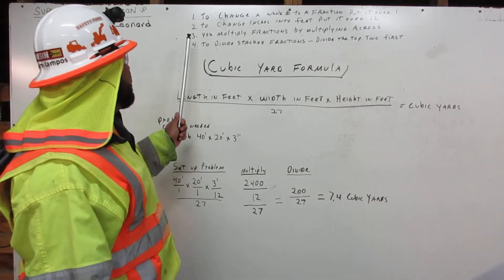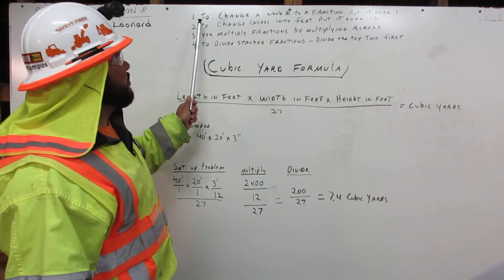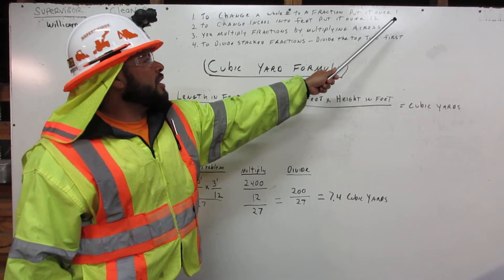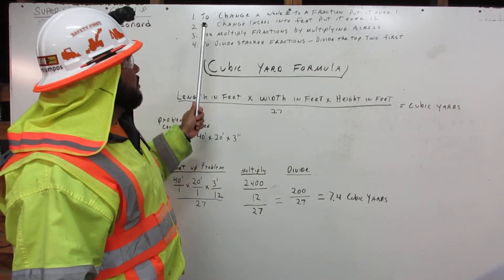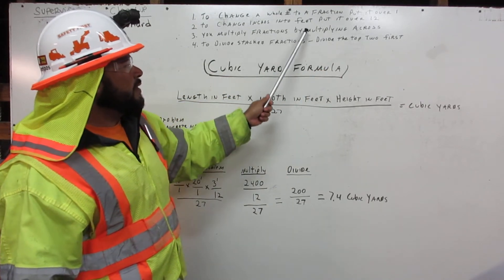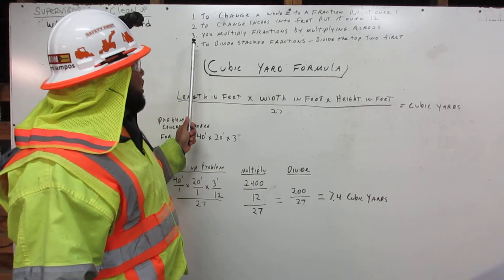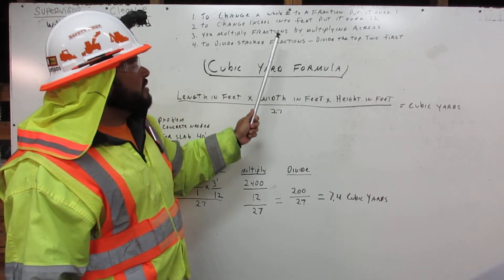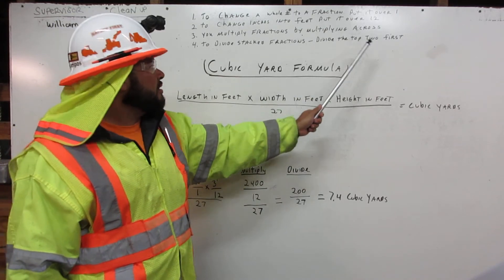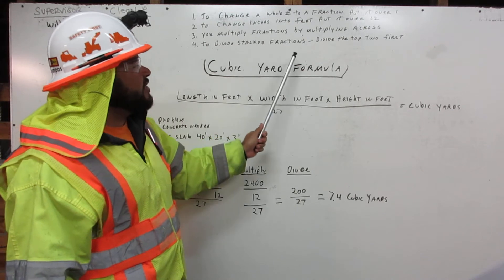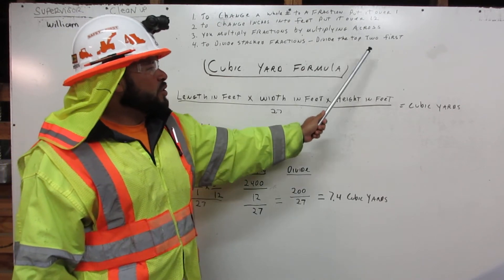We've got four simple rules. Rule number one: to change a whole number to a fraction, put it over one. Number two: to change inches into feet, put it over twelve. Number three: multiply fractions by multiplying across. Number four: to divide stacked fractions, divide the top two first.